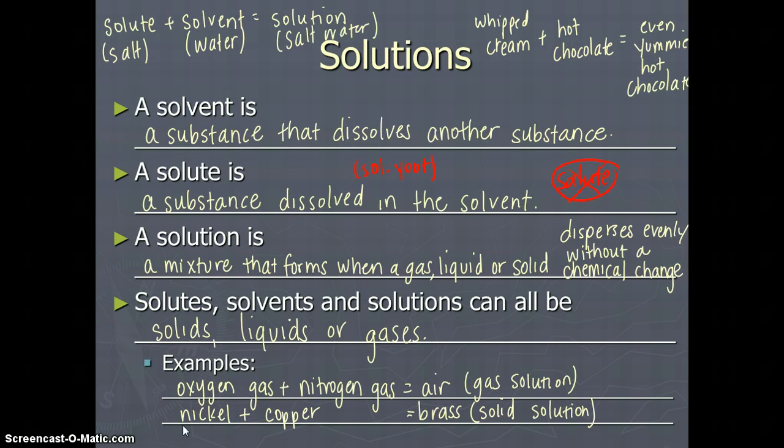A solid solution could be brass. Brass is actually a mixture of two different metals, nickel and copper. Some other examples that we gave up here are salt, which is our solute, dissolves in water, which is our solvent, and it produces a solution of salt water.